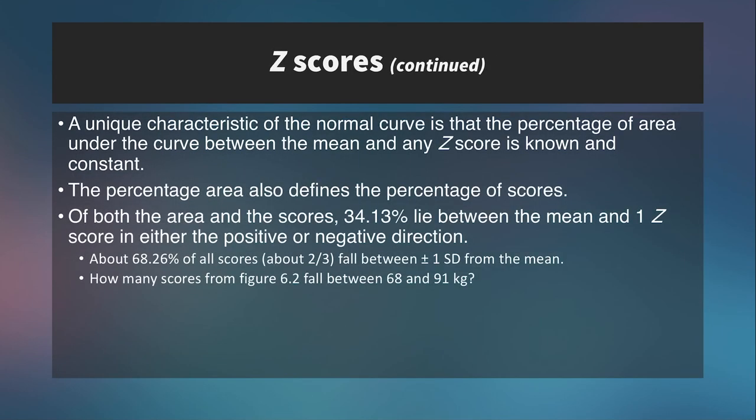The reason we go through all of this is that by converting scores into z-scores, it allows us to calculate the percentage of the area under the curve between the mean and any z-score. That percentage area also defines the percentage of scores. For instance, 34.13% of the scores lie between the mean and a z-score of 1 in either the positive or negative direction.